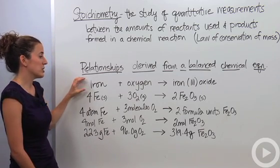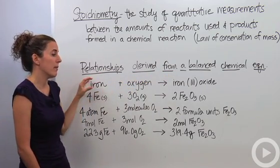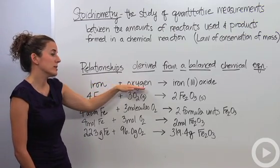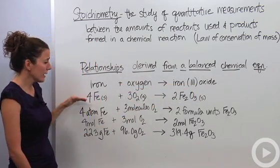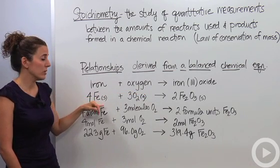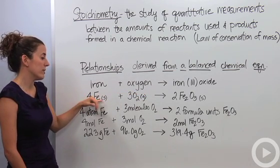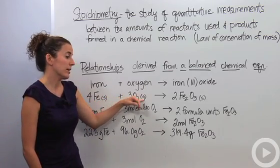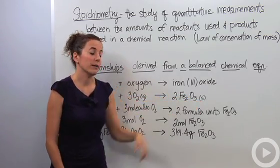The first thing we can get is the names of the compounds and elements — saying that iron reacts with oxygen to form iron three oxide. Then we get the balanced chemical equation with chemical symbols and states of matter: four Fe solid plus three O2 gas yields two Fe2O3 solid.